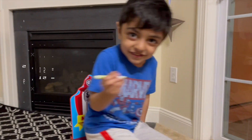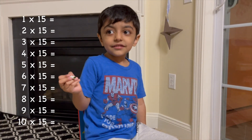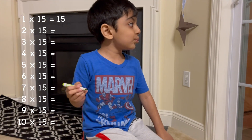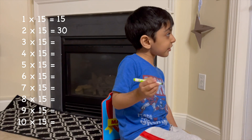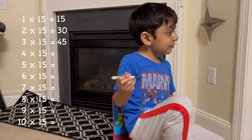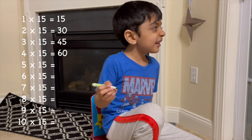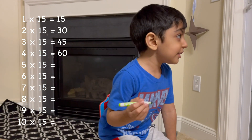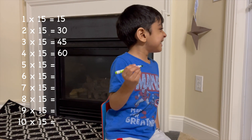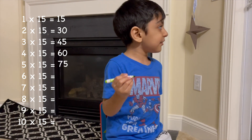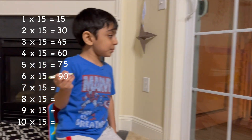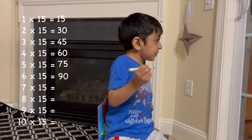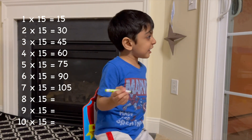Multiplication table of 15. 15 times 1 is 15. 15 times 2 is 30. 15 times 3 is 45. 15 times 4 is 60. 15 times 5 is 75. 15 times 6 is — 90? Yeah, that's right. 15 times 7 is 105.